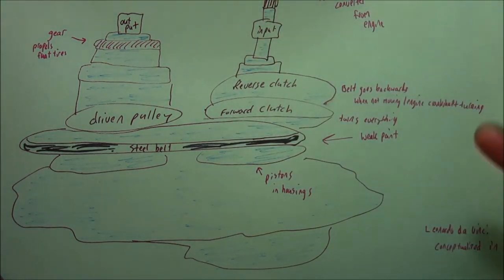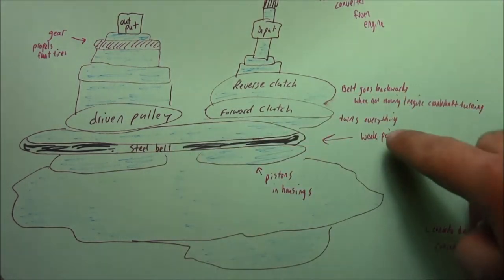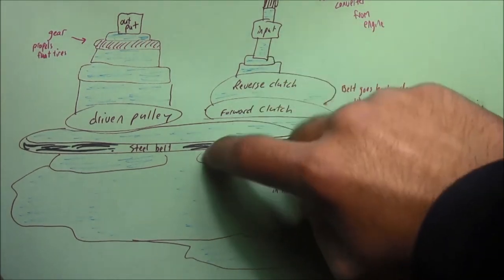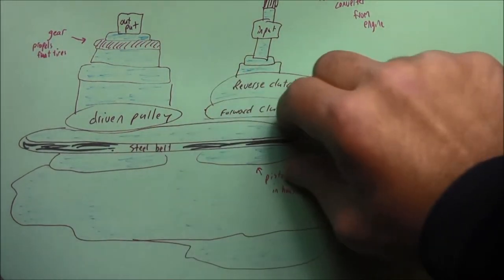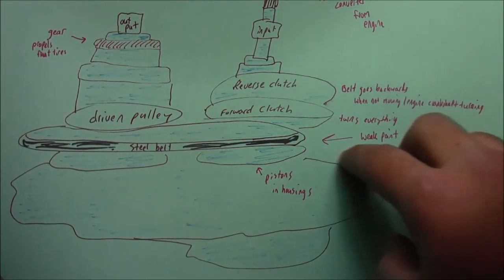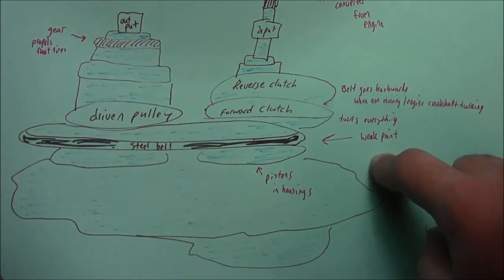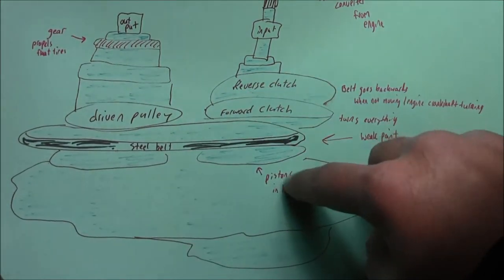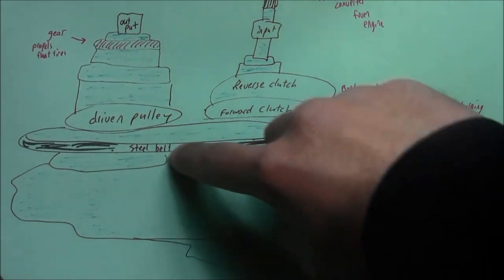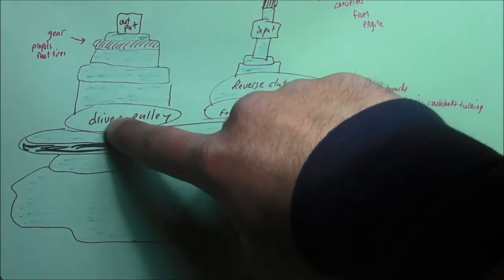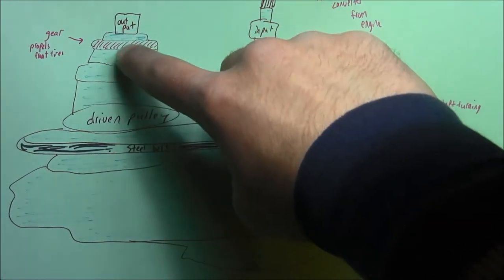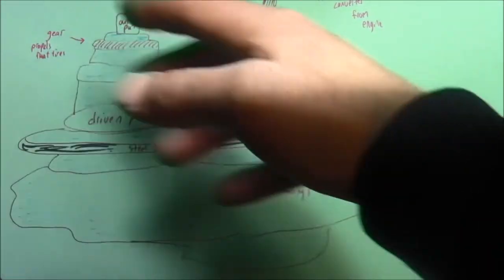When the forward clutch is engaged, it sandwiches onto and turns everything. The steel belt is the weakest point in all of this. A steel belt can break over time. The forward clutch drives the driven pulley, which goes out to the output to the transmission, and there's a gear here which propels the tires.